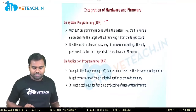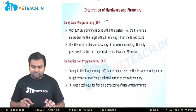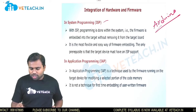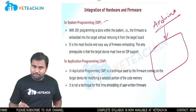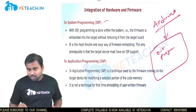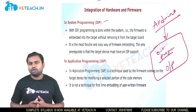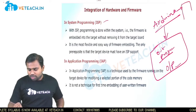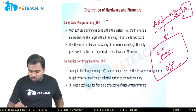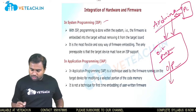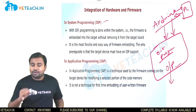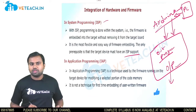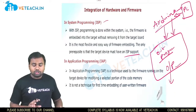For in-system programming, the firmware is developed within the system. The hardware supports the in-system programming task. For example, with an Arduino board connected to the hardware output path, if you want to re-change the program, you switch off the output path, connect a power cable to the Arduino board, connect to the PC, dump the new program, and switch the output board back on. However, the board must support the ISP concept — if it doesn't, this approach cannot be used.